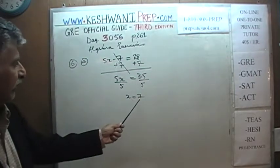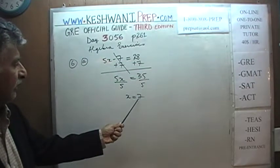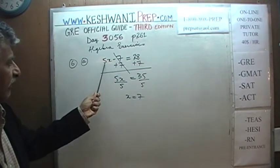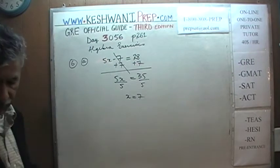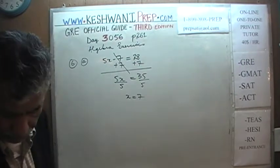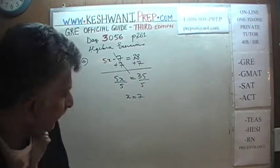We can very quickly verify it. We put x = 7 back in: 7 times 5 is 35, and 35 minus 7 is indeed 28. Let's look at part b.